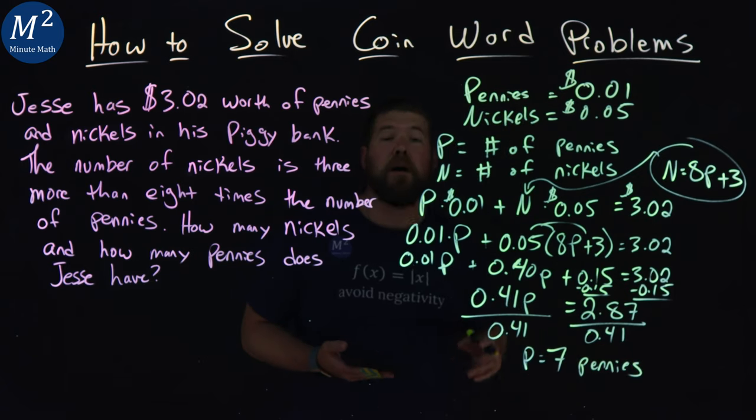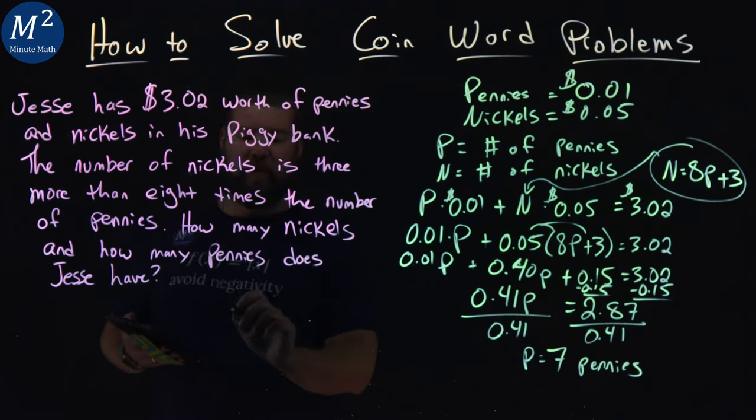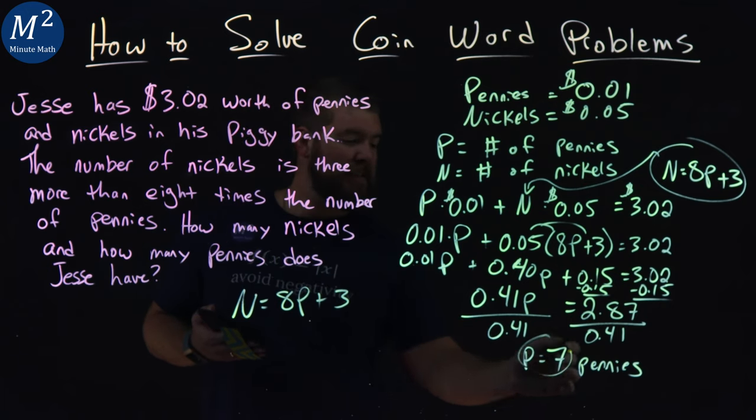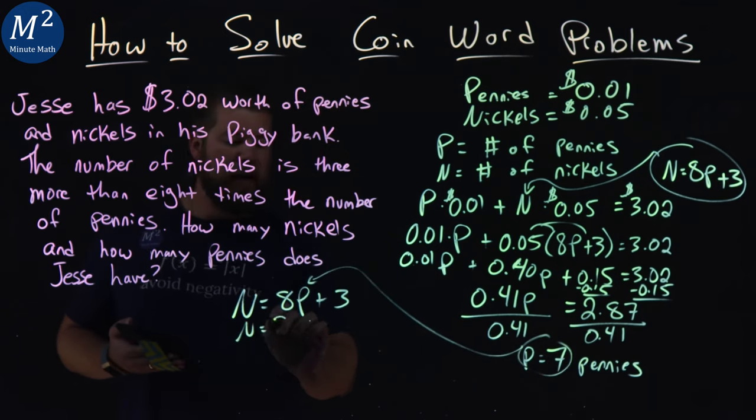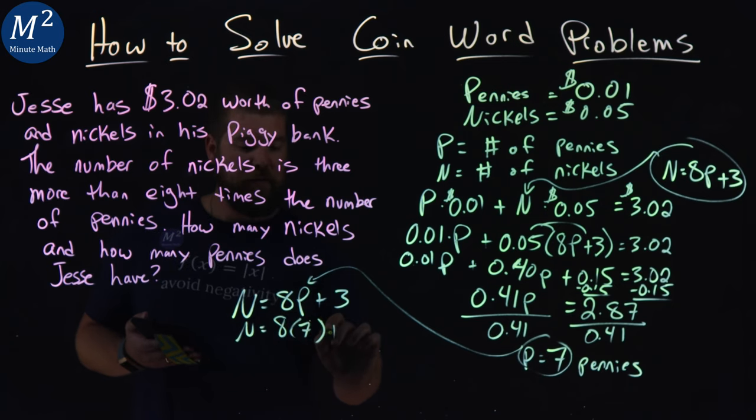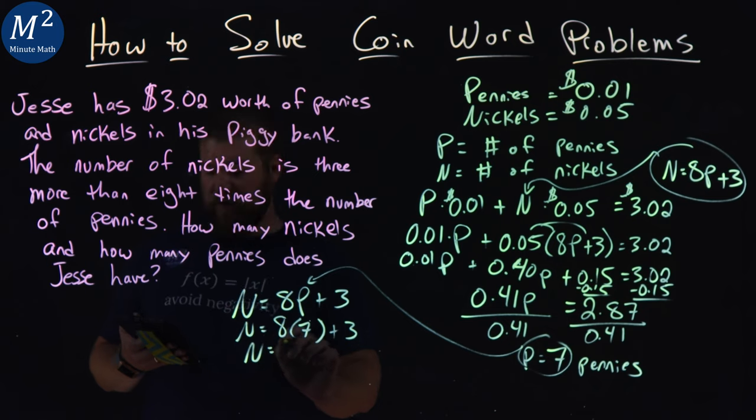Now we have to find the number of nickels. We found n equals 8p plus 3. We take that 7 we found for the number of pennies: 8 times 7 plus 3 gives us 59.